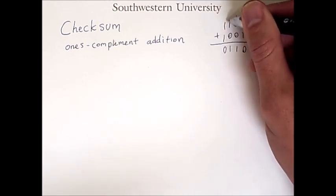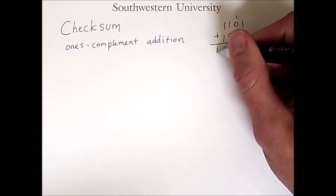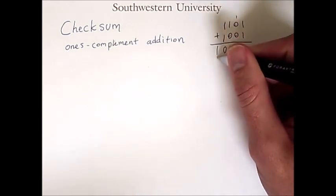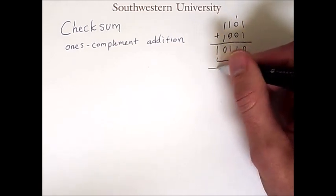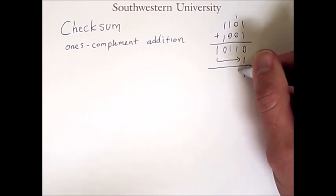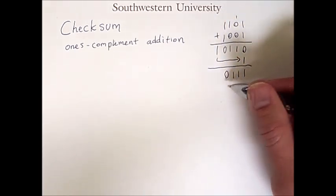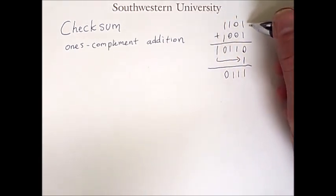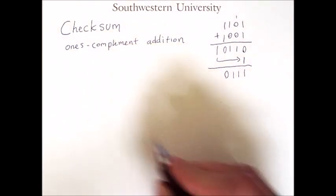And then we have a bit carrying out. Well, in one's complement addition, the one that carries out goes back over and is added to this result. So we get a 1 from there. And then these values come down. And then that bit is lost. So we have a final result that is 4 bits long, just like the two input values. So this is one's complement addition.